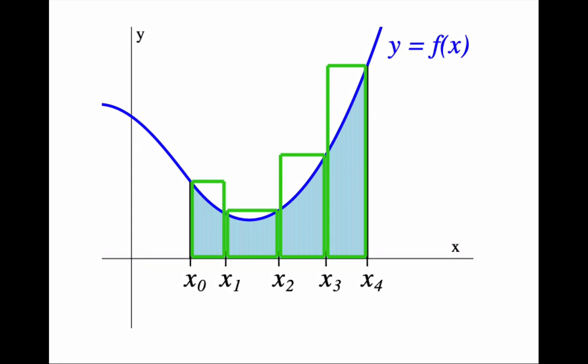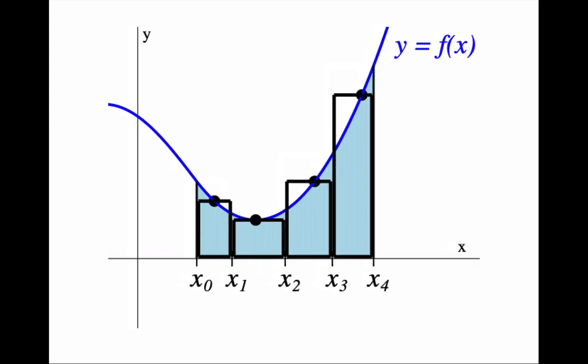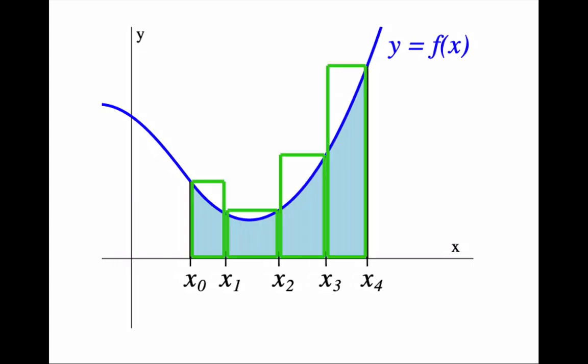So what if instead, I choose a random point on the graph of f over every subinterval, and I use the value of the function at that point as the height of the rectangle. That gives me a new set of rectangles to estimate the area. Notice that these rectangles are always between the lower rectangles and the upper rectangles, so they are just an estimate.